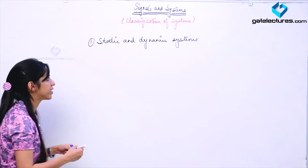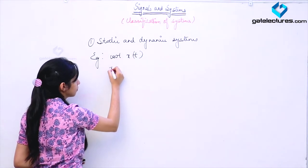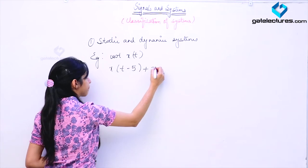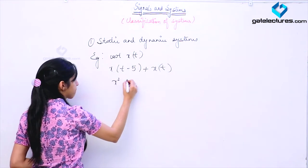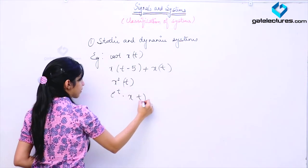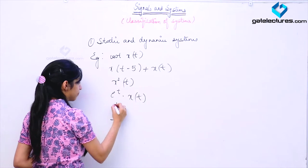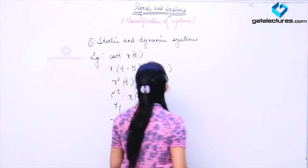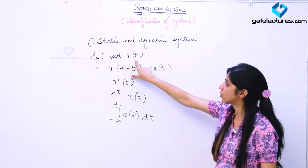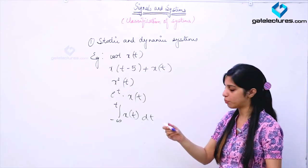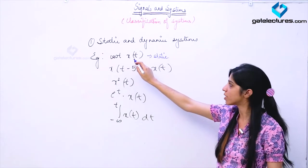We are taking some examples to explain it better. The first system that we have taken here depends on X(T) only — only on the present value of the input. So this is going to be a static system, since it depends only on the instantaneous value of the input.